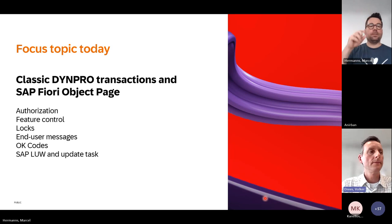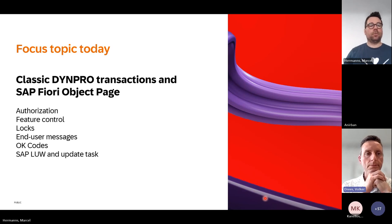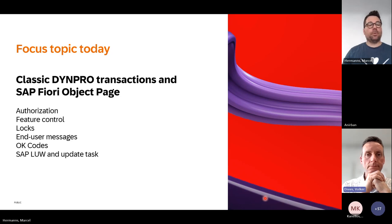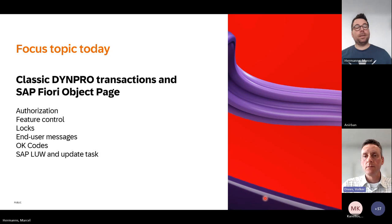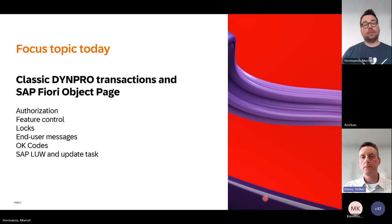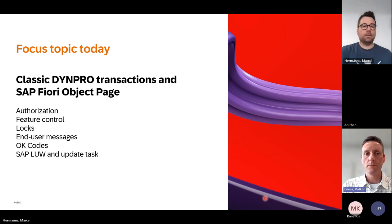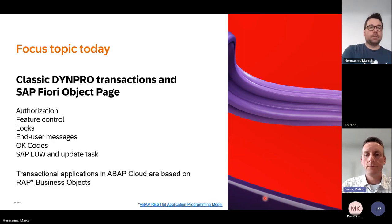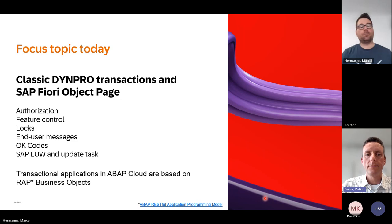Today we go further into detail. We will consider authorization checks, feature control — how to freeze fields as read-only, how to enable or disable actions, how to handle enqueue locks, messages, OK codes in more complex applications, and the SAP LUW and update tasks. We don't reinvent the wheel — we provide more guidance and best practices on how to support the SAP LUW, integrate update tasks, or direct database updates in the safe space. All of this is handled via the ABAP RAP application programming model and business objects.